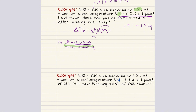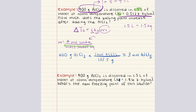Molality equals moles of solute divided by mass of solvent in kilograms. Our solvent is water and we have 1.5 liters. We want to convert that to kilograms. 1.5 liters equals 1.5 kilograms because the density of water is 1 gram per milliliter, which equals 1 kilogram per liter. So 1.5 liters equals 1.5 kilograms.